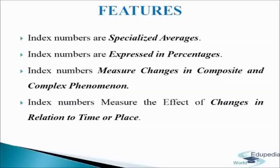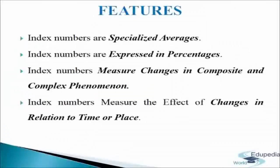The fourth feature is that index numbers measure the effect of changes in relation to time or place. Index numbers are used to compare changes which take place over periods of time, between locations, and in categories. Index numbers are constructed to make comparisons over different time periods with reference to a base year. They also measure changes and compare economic conditions of different business units, different places, and different countries. For example, cost of living may be different at two different places at the same time, or cost of living in one city can be compared across two periods of time.